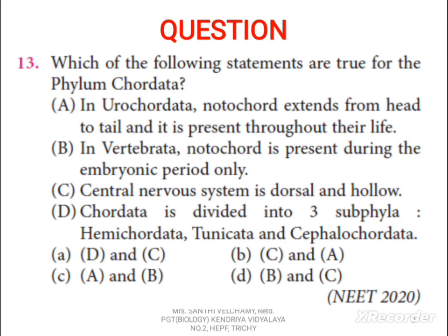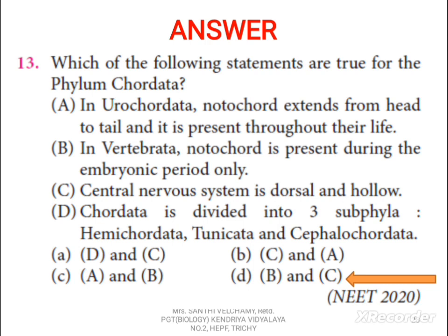The thirteenth question: which one of the following statements are true for phylum Chordata? A) In Urochordata, notochord extends from head to tail and is present throughout their life. B) In Vertebrata, notochord is present during the embryonic period only. C) Central nervous system is dorsal and hollow. D) Chordata is divided into three subphyla: Hemichordata, Tunicata, and Cephalopoda. The correct answer is D. In Urochordata, notochord is present only in the larval tail. Phylum Chordata is divided into Urochordata, Cephalochordata, and Vertebrata.